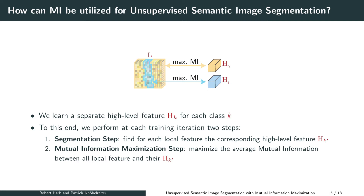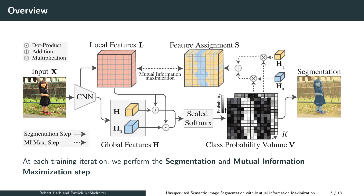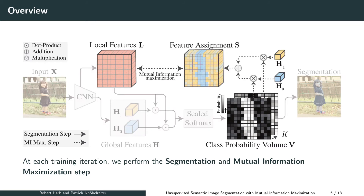This allows us to perform segmentation by attributing the influence of each image area to the respective high-level features. To this end, we perform two steps at each training iteration: first, a segmentation step in which we segment the image by assigning each local feature the high-level feature of its corresponding class; followed by a mutual information maximization step, in which we maximize the average mutual information between all local features and their assigned high-level features.